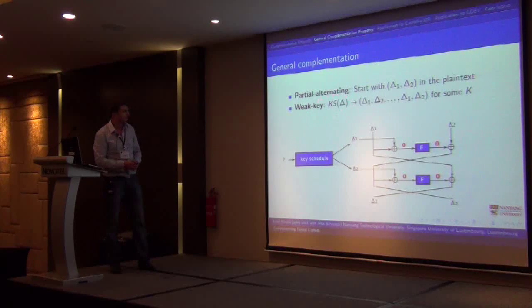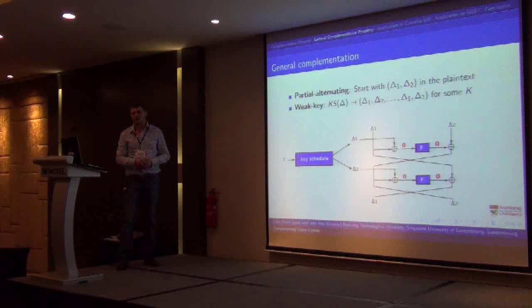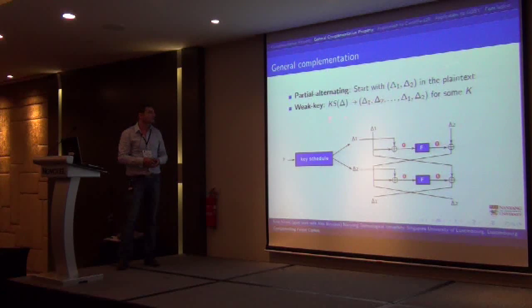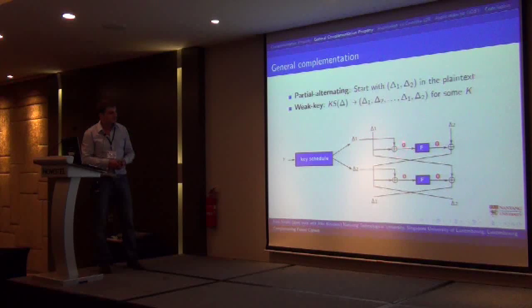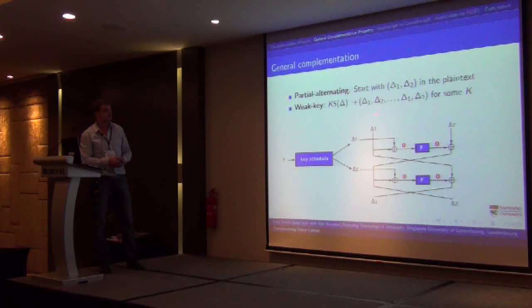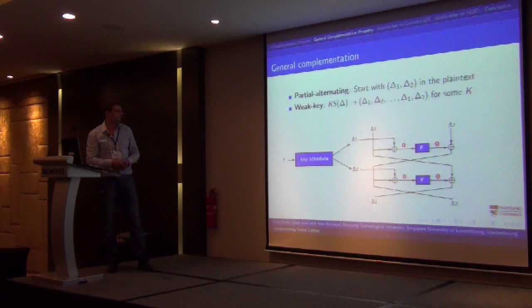Basically, for some key and the key schedule, we can produce some differential that from delta produces alternating differences in the sub-keys: in the first sub-key you have difference delta_1, in the second delta_2, in the third delta_1, then delta_2, and so on, for some keys — meaning a weak key class. Then if you start with differences delta_1 and delta_2 in the plaintext, after the key XOR it cancels, and this holds with probability one. Then delta_2 comes in, cancels again with probability one, and so on. So if you have these alternating differences in the sub-keys, after two rounds it repeats — we produce a two-round iterative characteristic where everything holds with probability one.